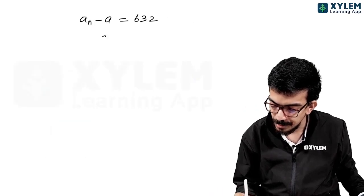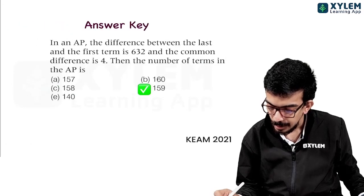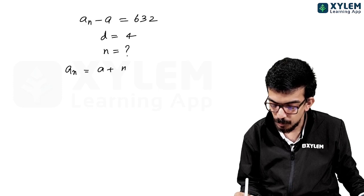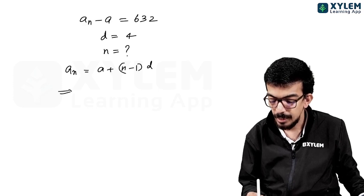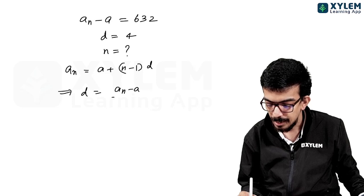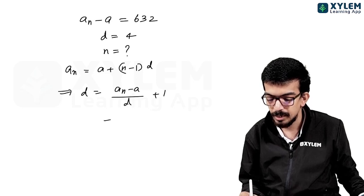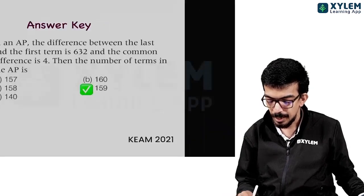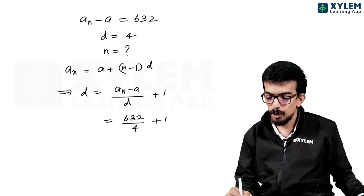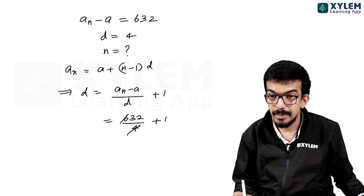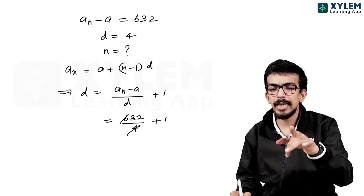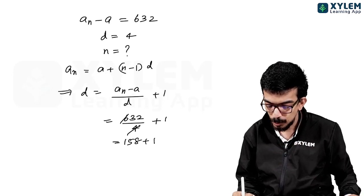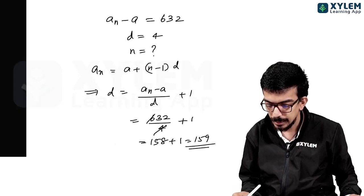Common difference d is equal to 4. The number of terms: using an = a + (n−1)d, the formula gives n = (difference divided by d) plus 1, which is 632 divided by 4 plus 1. That is 158 plus 1. The correct answer is 159.